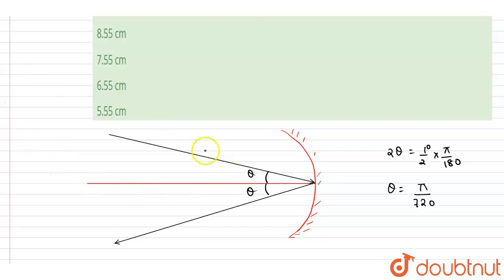Now we know that the object which is at infinity, the image will form at the focus. So this will be the image. We want this distance. Let's say I say this distance as x naught.